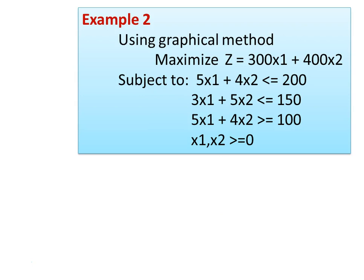We take another example. Maximize Z equal to 300X1 plus 400X2, subject to the constraints: 5X1 plus 4X2 less than or equal to 200, 3X1 plus 5X2 less than or equal to 150, 5X1 plus 4X2 greater than or equal to 100, and X1, X2 are greater than or equal to 0 — the non-negative condition.